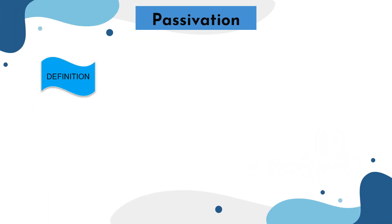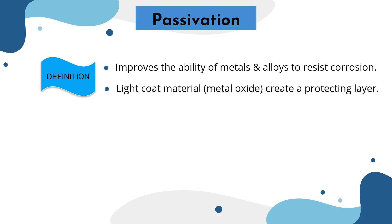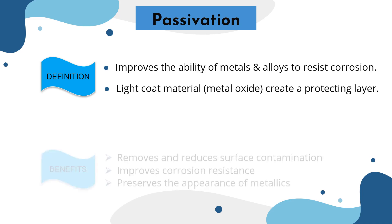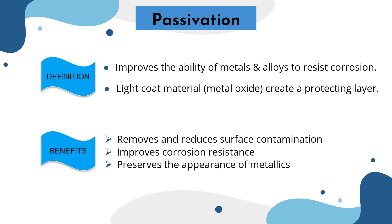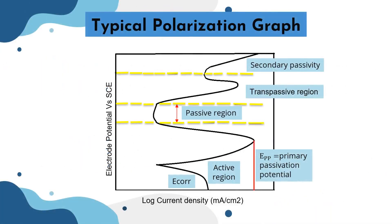Passivation is a chemical process that improves the ability of metals and alloys to resist corrosion. It utilizes a light coat of materials such as metal oxide to create a protecting layer against corrosion. These are the benefits of passivation on metals. This is an example of a typical polarization graph.